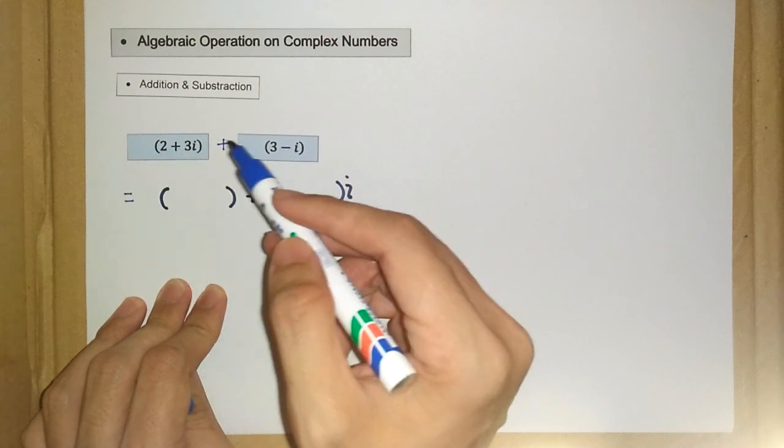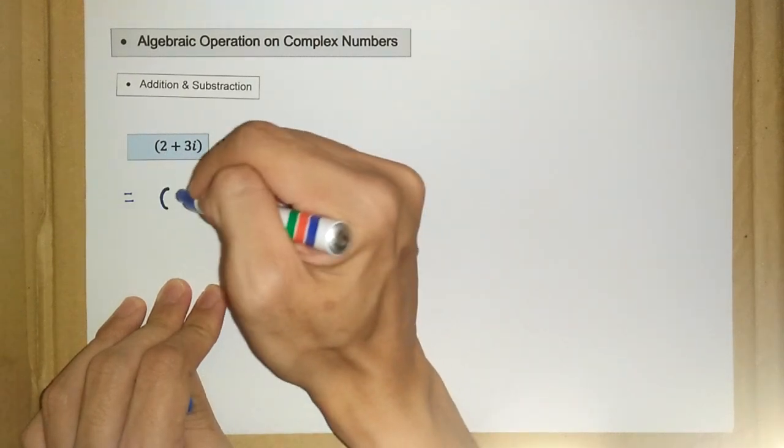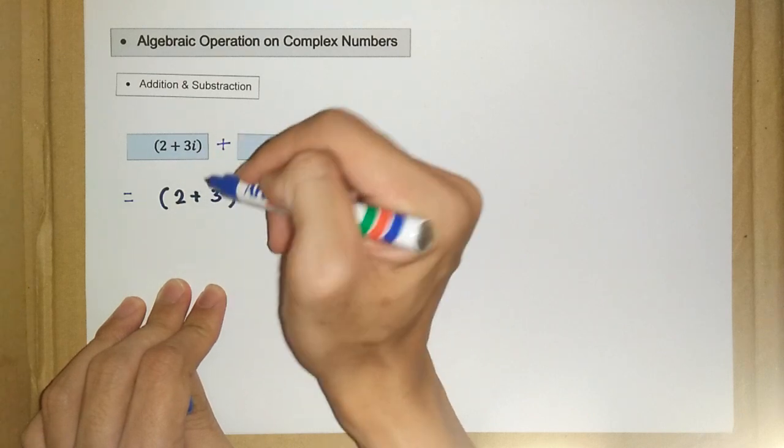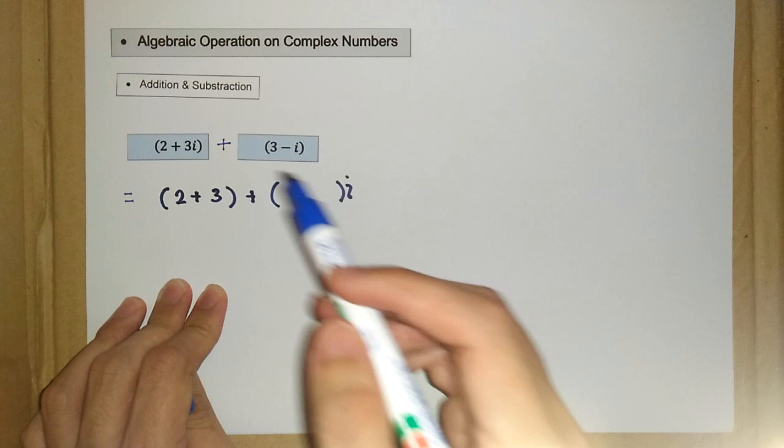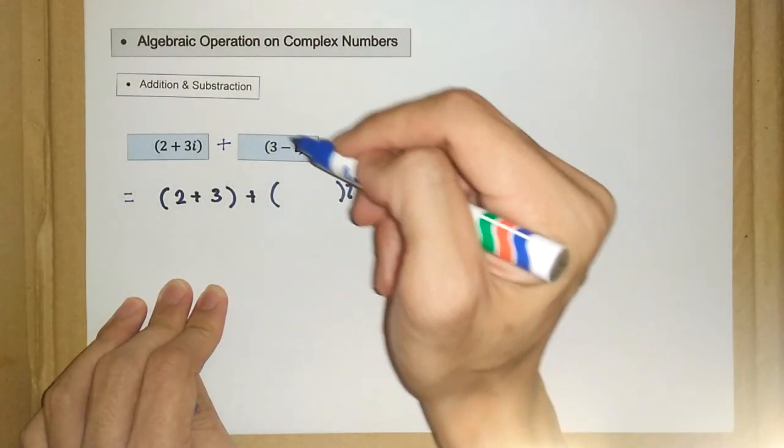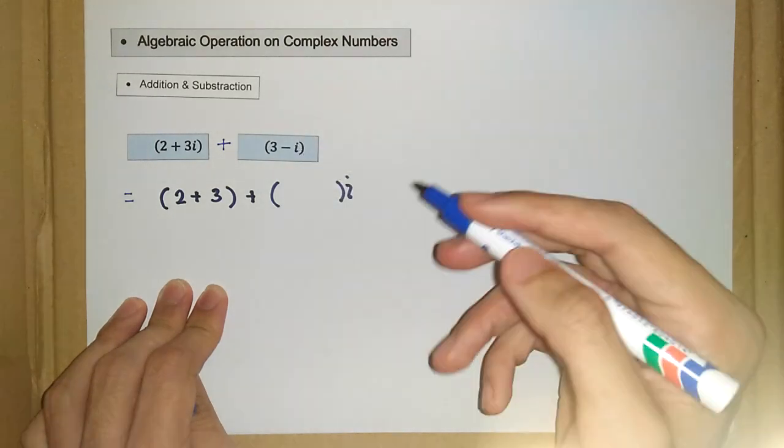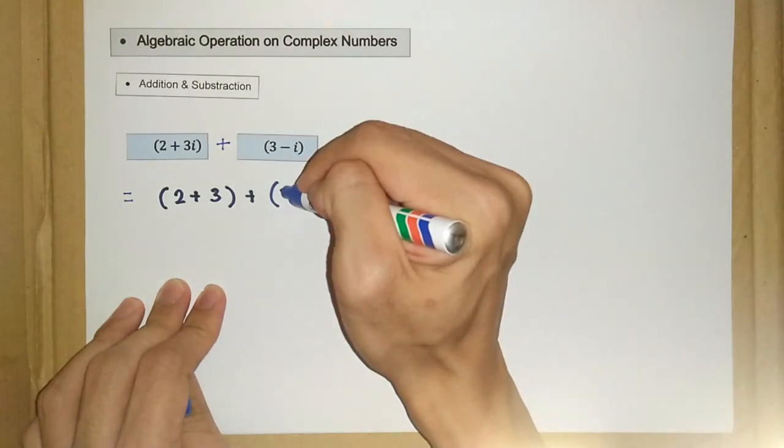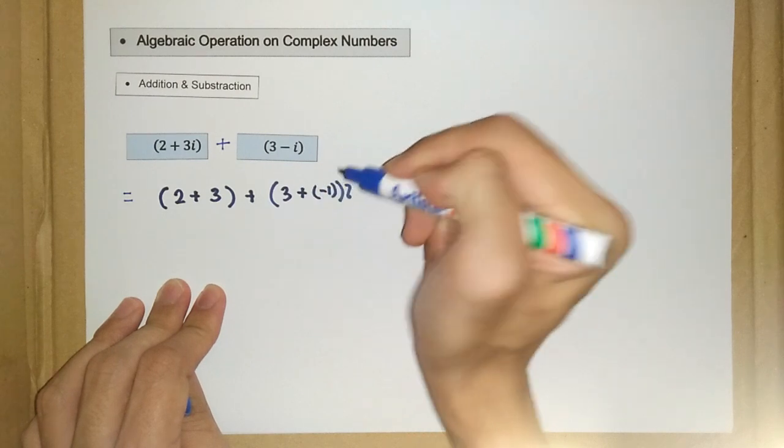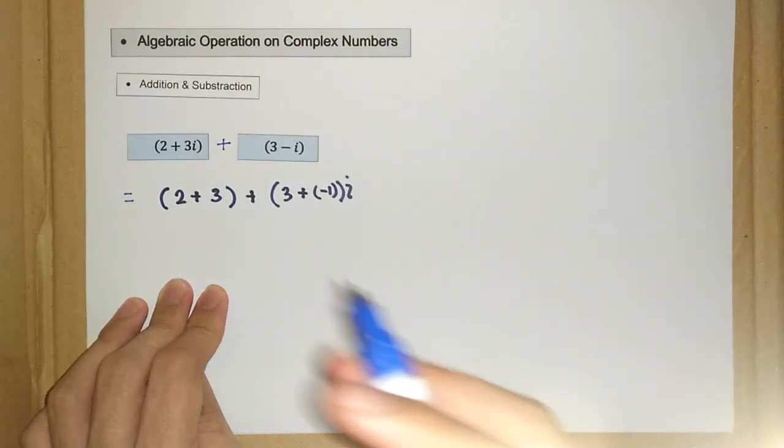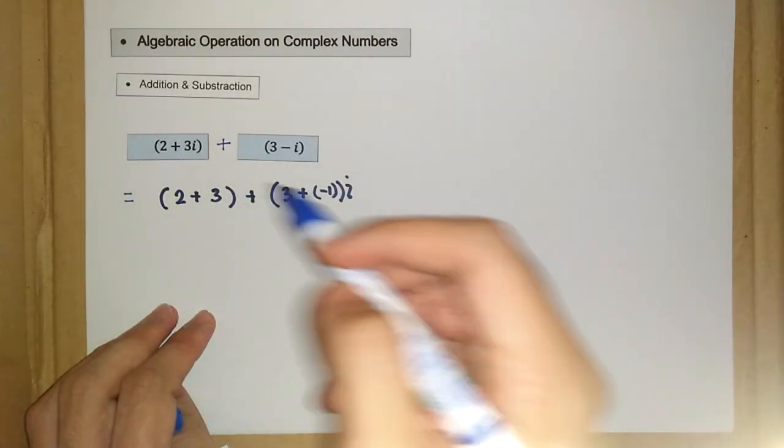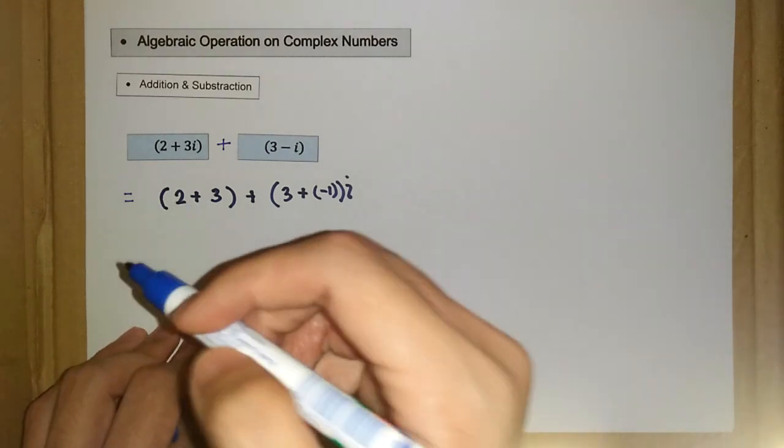we have 2 plus 3. So we have 2 plus 3 inside the real part. And for the imaginary part, we have 3 plus negative 1. So it should be like this, the most basic one. We can also skip this step.